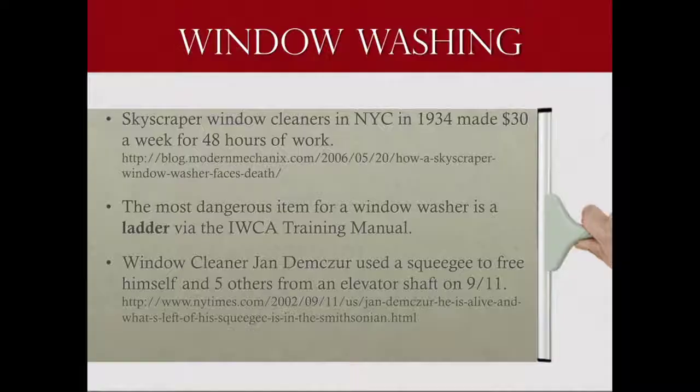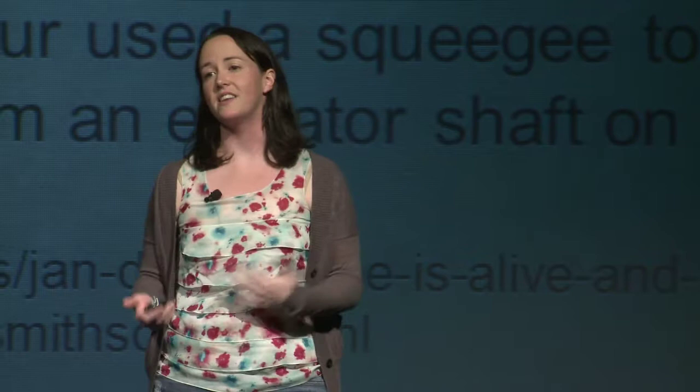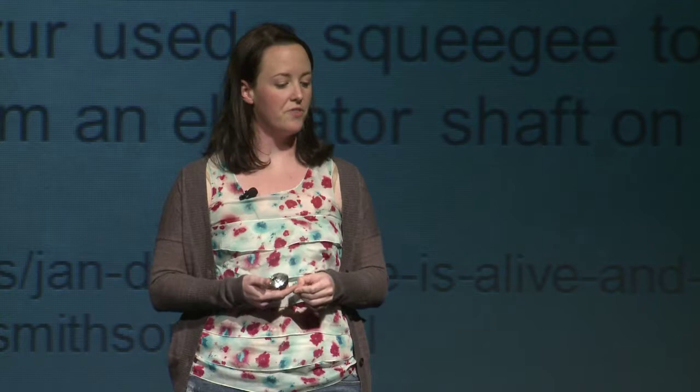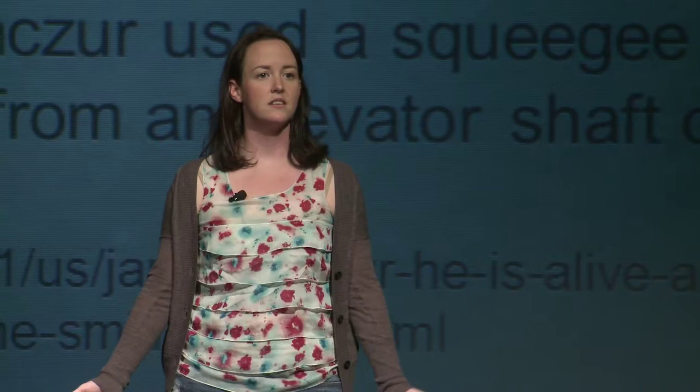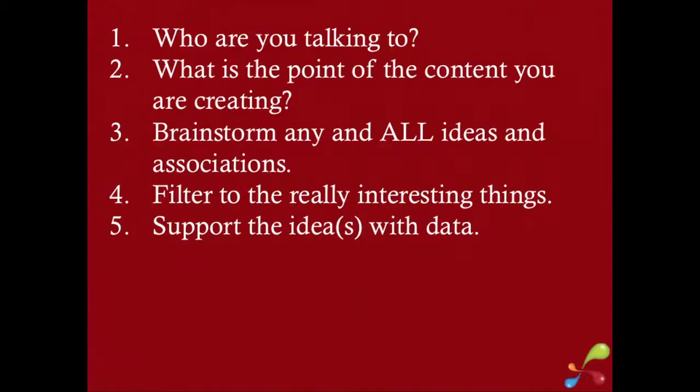The information I looked up about window washing — skyscraper window cleaners in New York City in 1934 made $30 a week for 48 hours of work. Compare that to what they're making now — easy, or show it over time. The most dangerous item for a window washer is a ladder, because it's not anchored down — they actually try to keep window washers from using ladders because it's more dangerous. And the most fascinating: a window cleaner named Jan Dimsker used a squeegee to free himself and five others from an elevator shaft on 9/11. That squeegee is now in the Smithsonian.